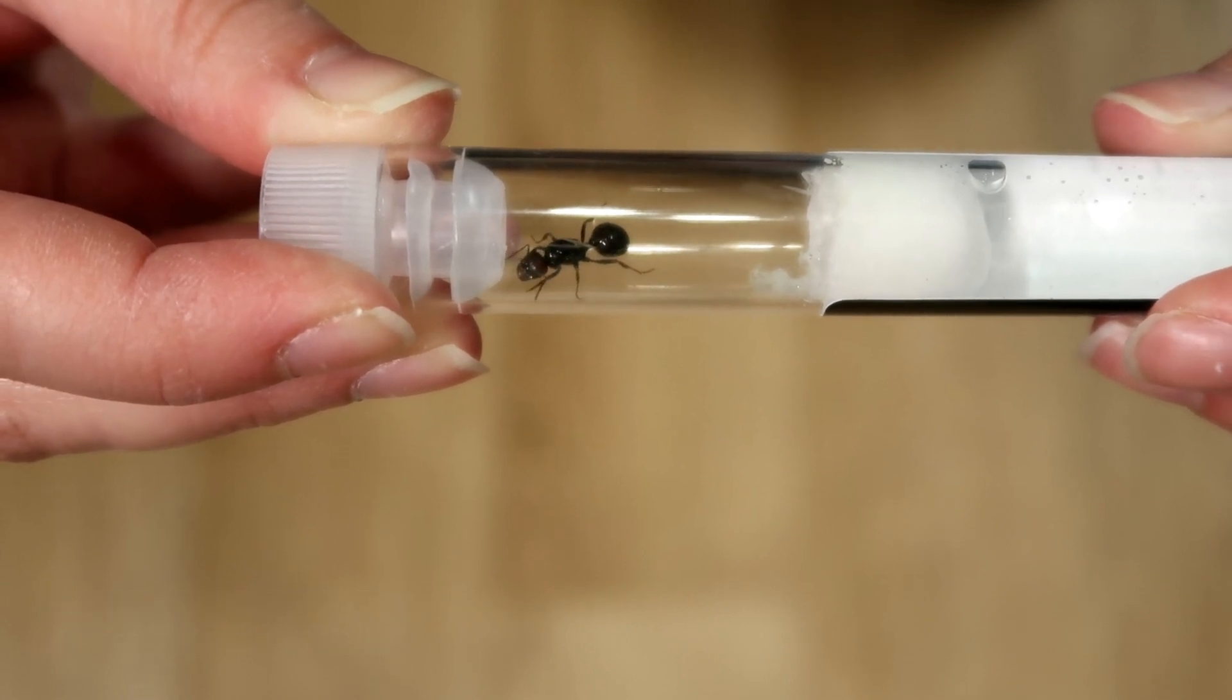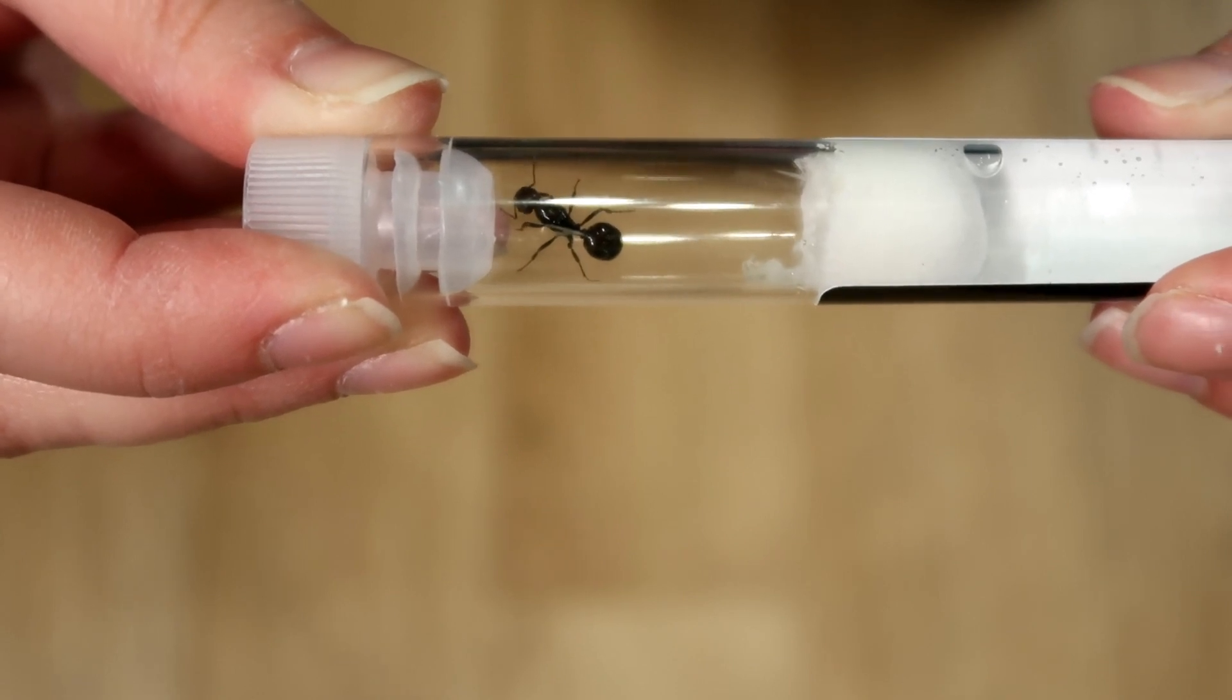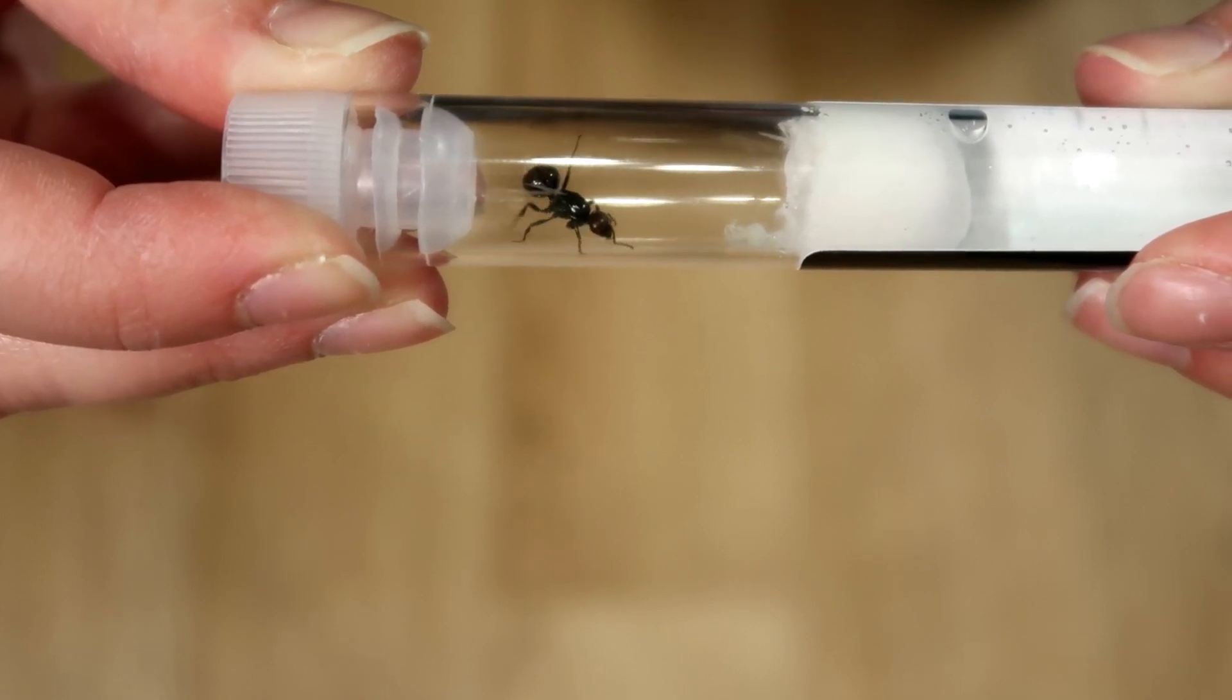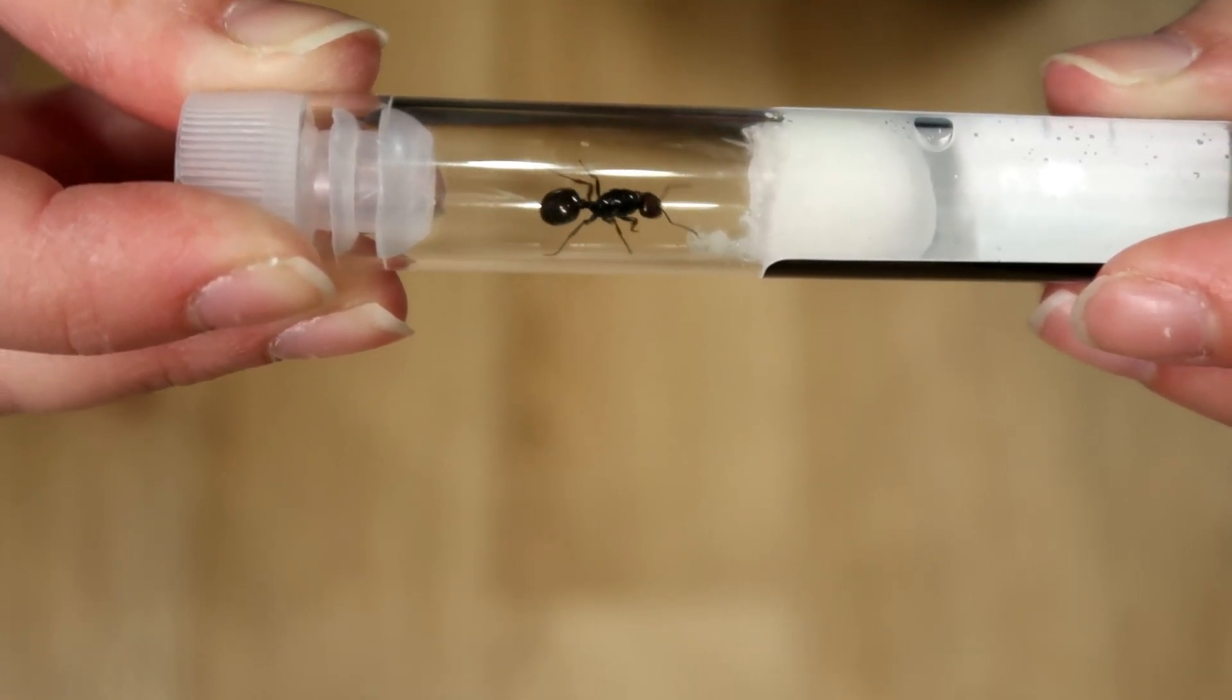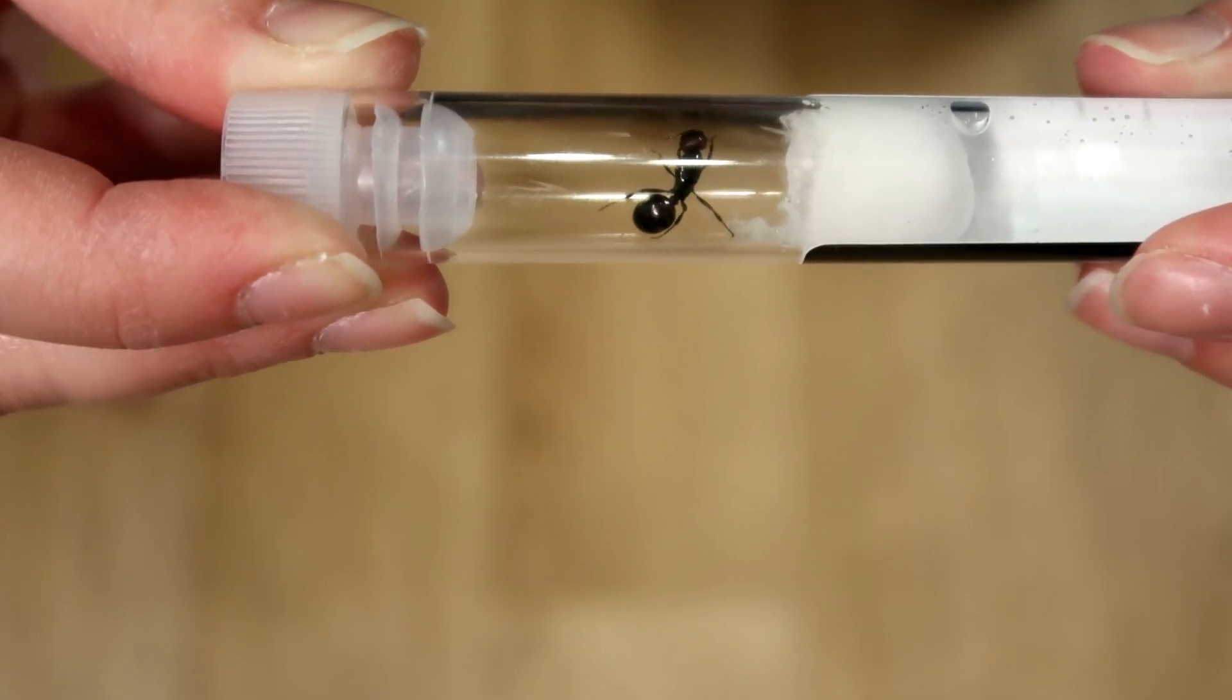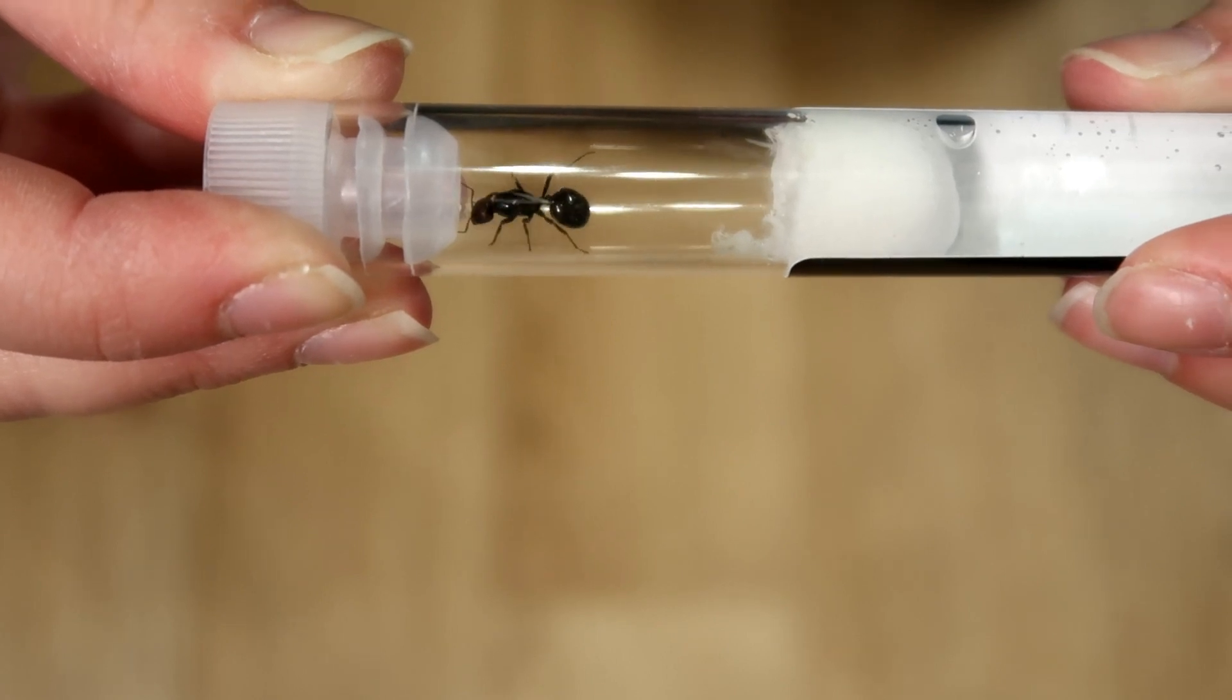I can't actually see any of her brood in here. She may have moved them, hidden them in the cotton. She may have eaten them due to stress, but it is what it is. I don't want to mess around too much with her but she is looking very healthy, curious, very big as well.